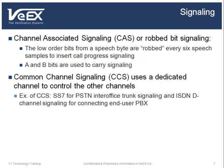Signaling is used for call control, such as establishing or tearing down a call connection. Signaling can be transmitted in several ways. One of these methods is channel-associated signaling, or CAS, which uses a robbed bit taken from the DS0 channel voice signal to indicate progress. Every six speech samples, the least significant bit of every channel is robbed to transfer the A and B bits used to carry signaling. This has a negligible impact on voice quality. The concept of robbed bit signaling was later replaced by common channel signaling, or CCS, which uses a dedicated channel to carry signaling information. Examples of CCS would be SS7 for PSTN interoffice trunk signaling, and ISDN D-channel signaling for connecting an end user PBX.